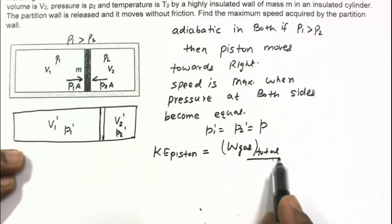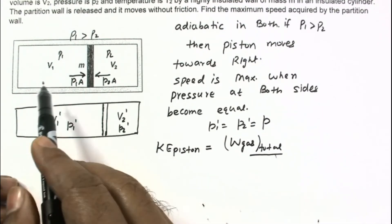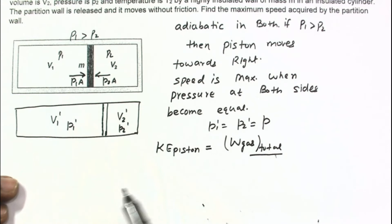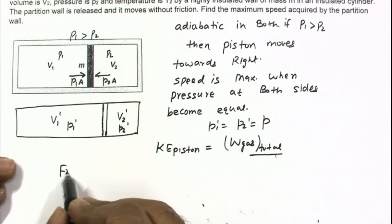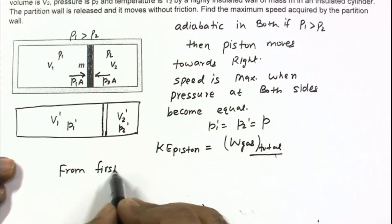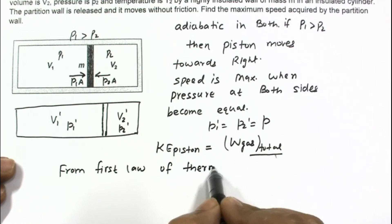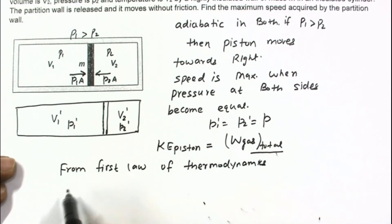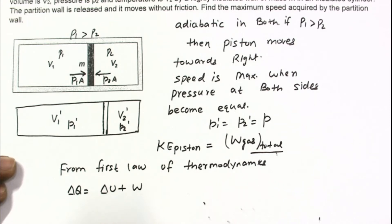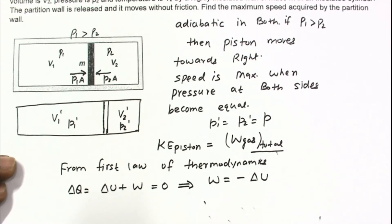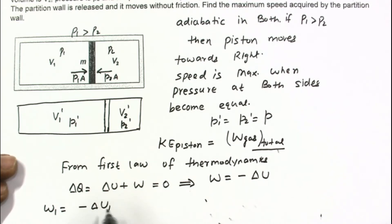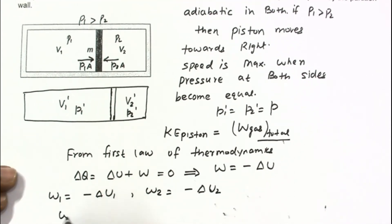The net work done by the gas on both sides equals the kinetic energy of the piston. Since the process in each side is adiabatic, from the first law of thermodynamics: delta Q equals delta U plus W, and delta Q equals zero, so W equals minus delta U. Work done by gas 1 is minus delta U1, and by gas 2 is minus delta U2. The total work W1 plus W2 equals the kinetic energy, which is (1/2)mv².